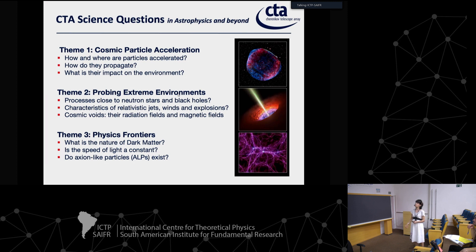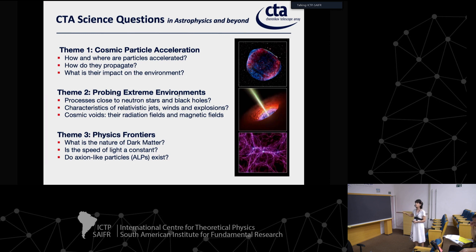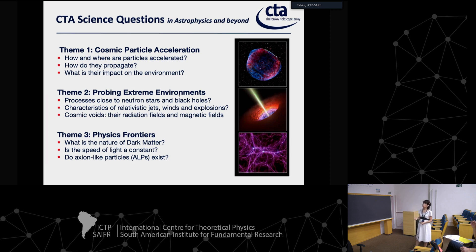We will be able to explore the characteristics of relativistic jets, winds, and explosions responsible for the production of these particles and high-energy gamma rays. We are also going to explore cosmic voids because gamma ray radiation produced in these sources is able to travel through the intergalactic medium and interact with background radiation fields and background magnetic fields - whatever is there we are going to probe with CTA's key capabilities.